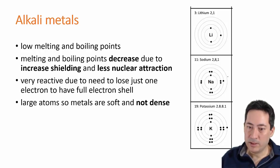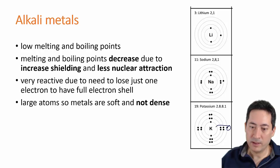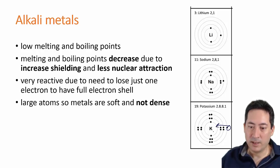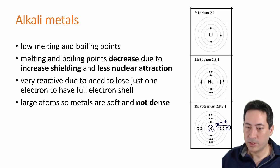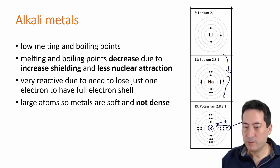Because the electrons on the outside are much further away and have less electrostatic attraction. Because even though there is a stronger nuclear charge, the distance is much, much greater because it's on an extra shell as you go down. And so the electron pops off much, much easier.